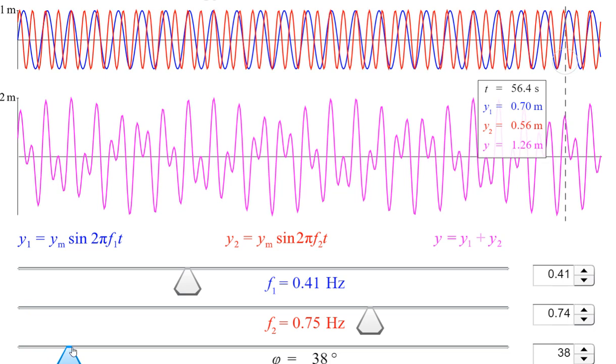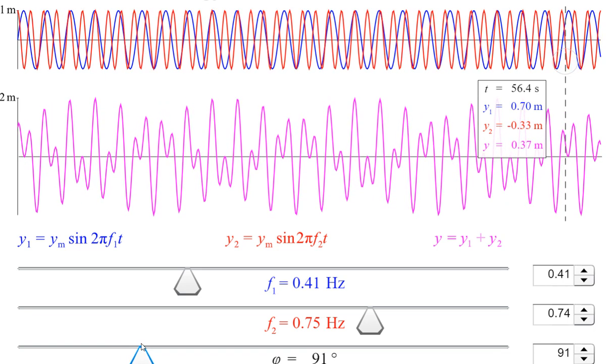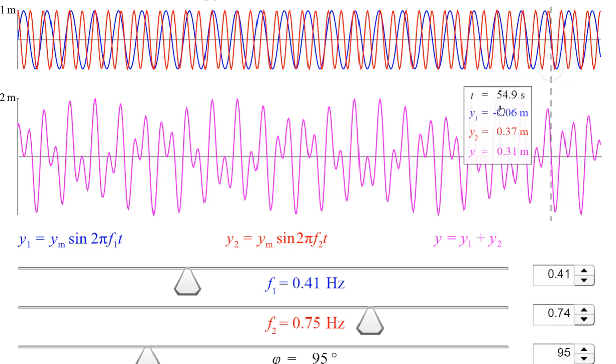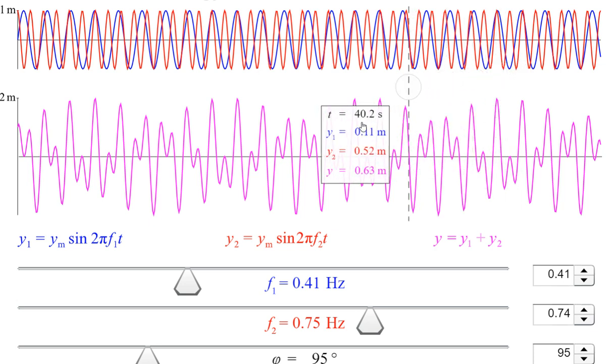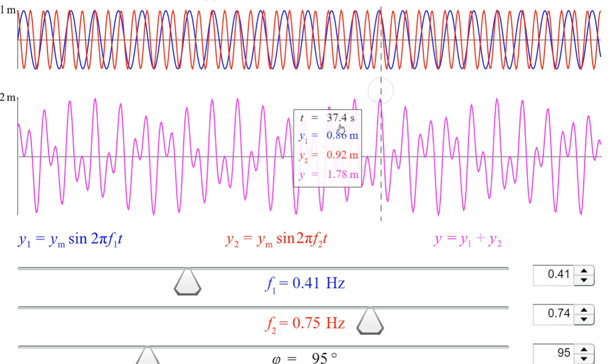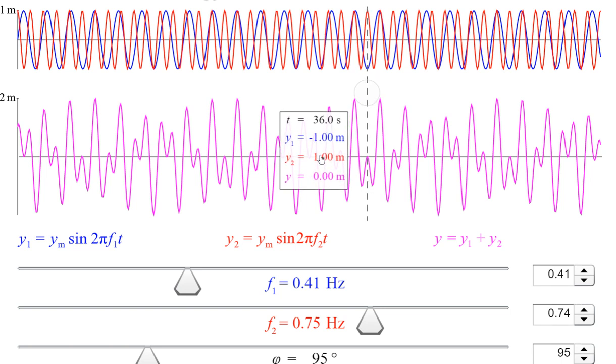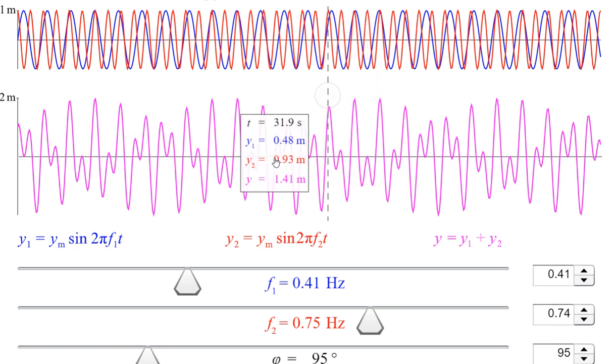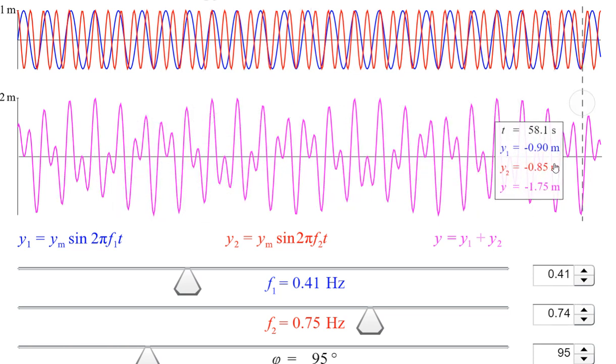You can analyze these variations. We also know the parameters at this instant of time, like at 56.4 seconds, what is the displacement of the first wave at different positions. For example, at this position we have t equals 37.3 seconds, y1 is 0.96 meters, y2 is 1 meter. This is their resultant. At some points we have zero resultant. So this is basically the superposition of harmonic oscillations.